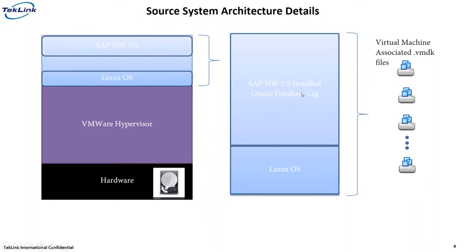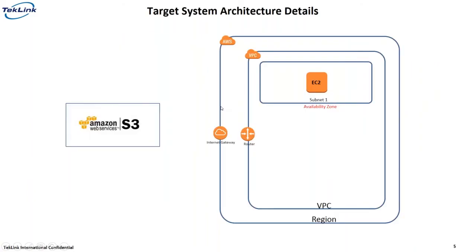Inside this VM is SAP NetWeaver installed on an Oracle 12G database, with the operating system being Linux. This virtual machine's data is actually split and stored in different VMDK files. So the whole VM is split into different VMDK files — VMDK files are nothing but virtual machine disk files. When we migrate this to the target environment, we need to understand that target environment.